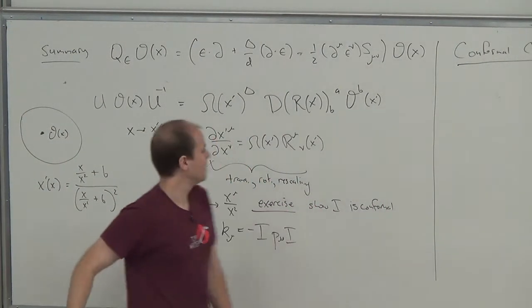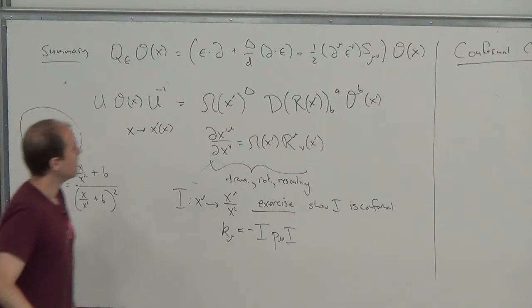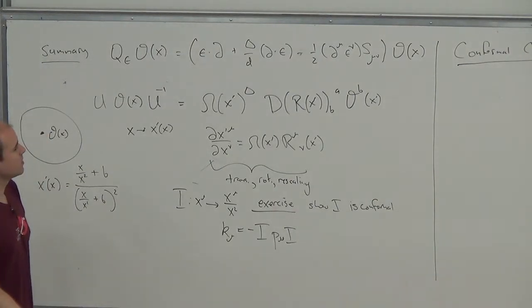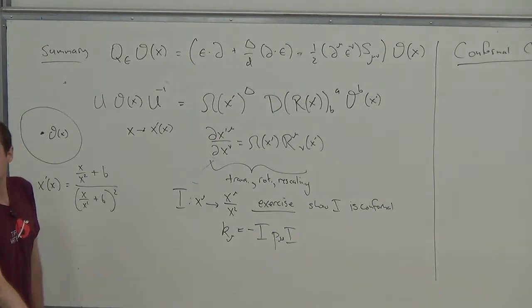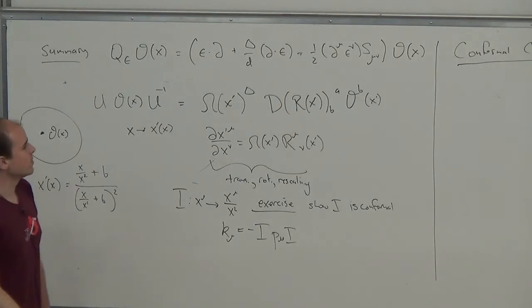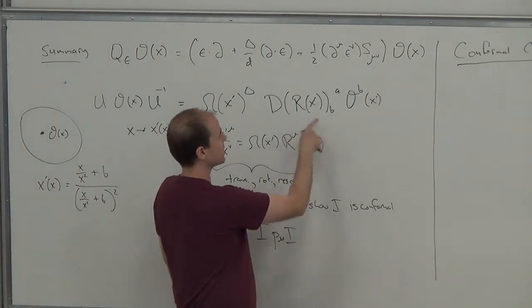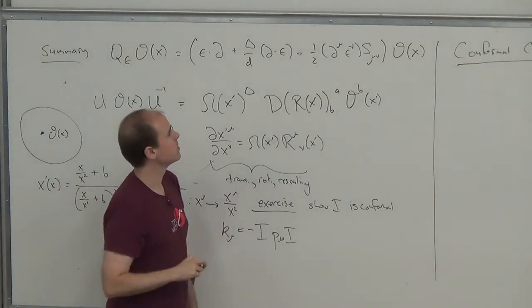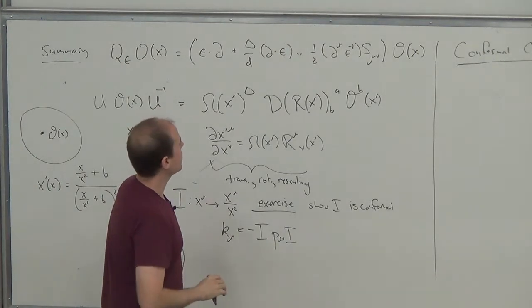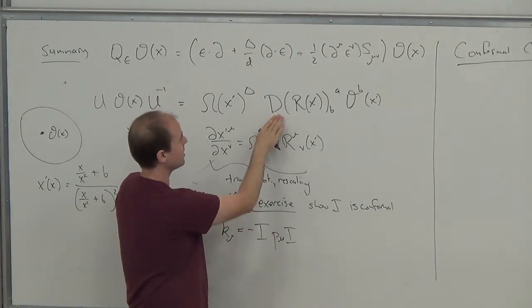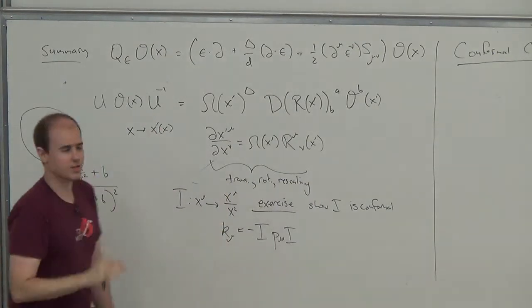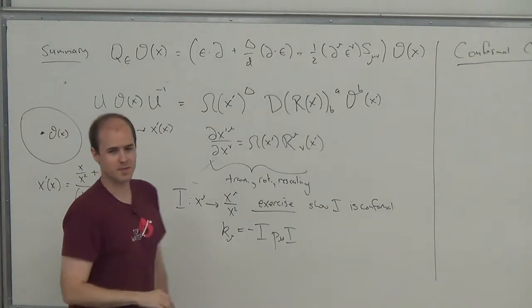Question about D in the transformation formula: D stands for a representation matrix. It depends on the spin of O what D actually means. Note that D here is not related to the dilatation operator — the notation is unfortunately redundant. For a special conformal transformation, you compute the derivative, factor it into a scaling and a rotation, and then use those factors. This can always be done because that's the definition of a conformal transformation.